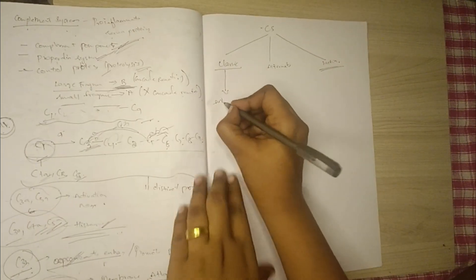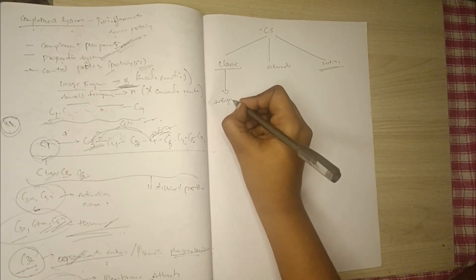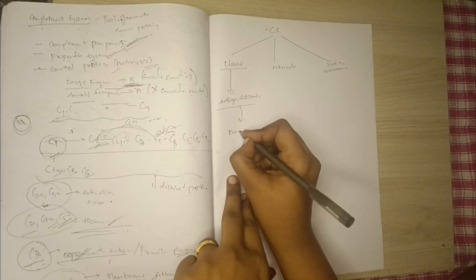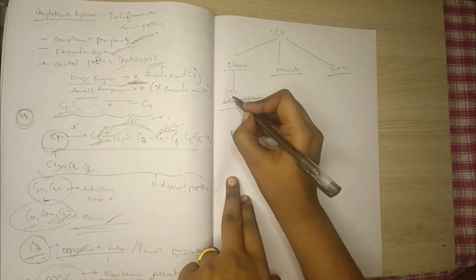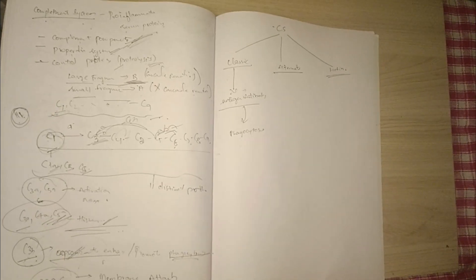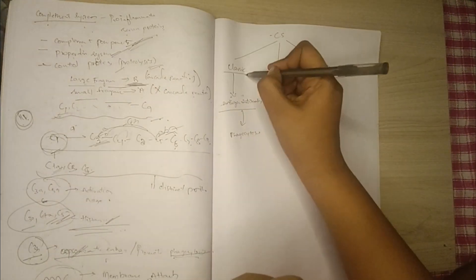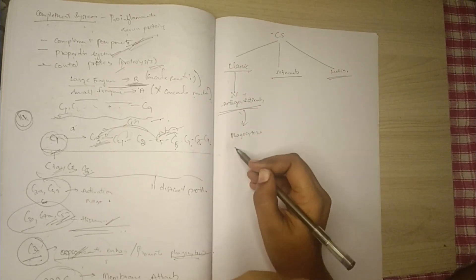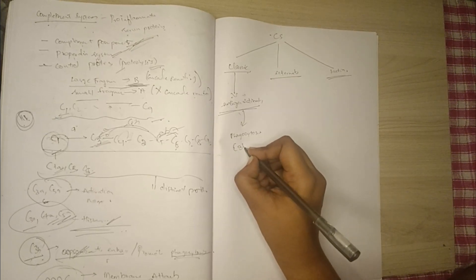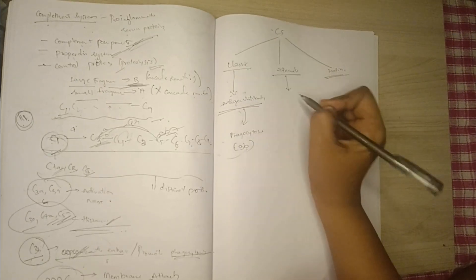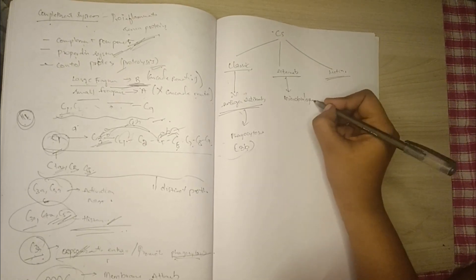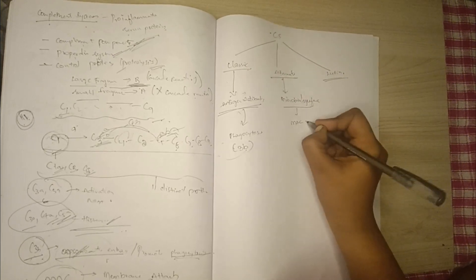In the classic pathway, antigen-antibody complexes promote phagocytosis — there is no direct need for microbes, and the MAC complex is not directly formed. The promotion of phagocytosis occurs indirectly via C3b.